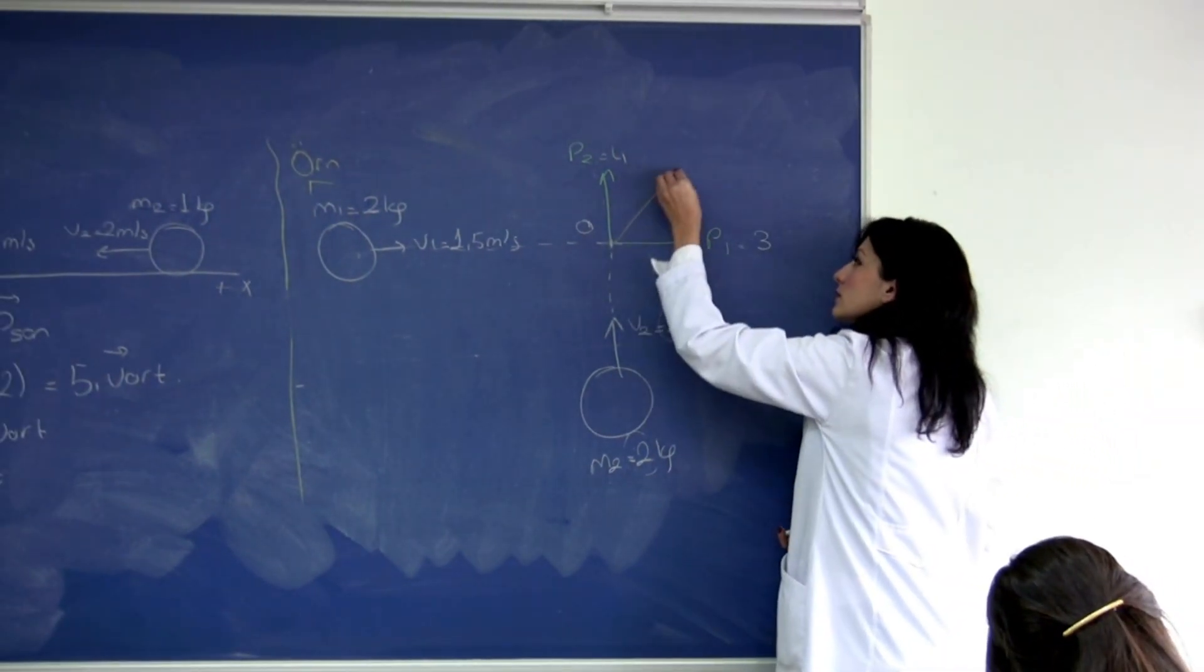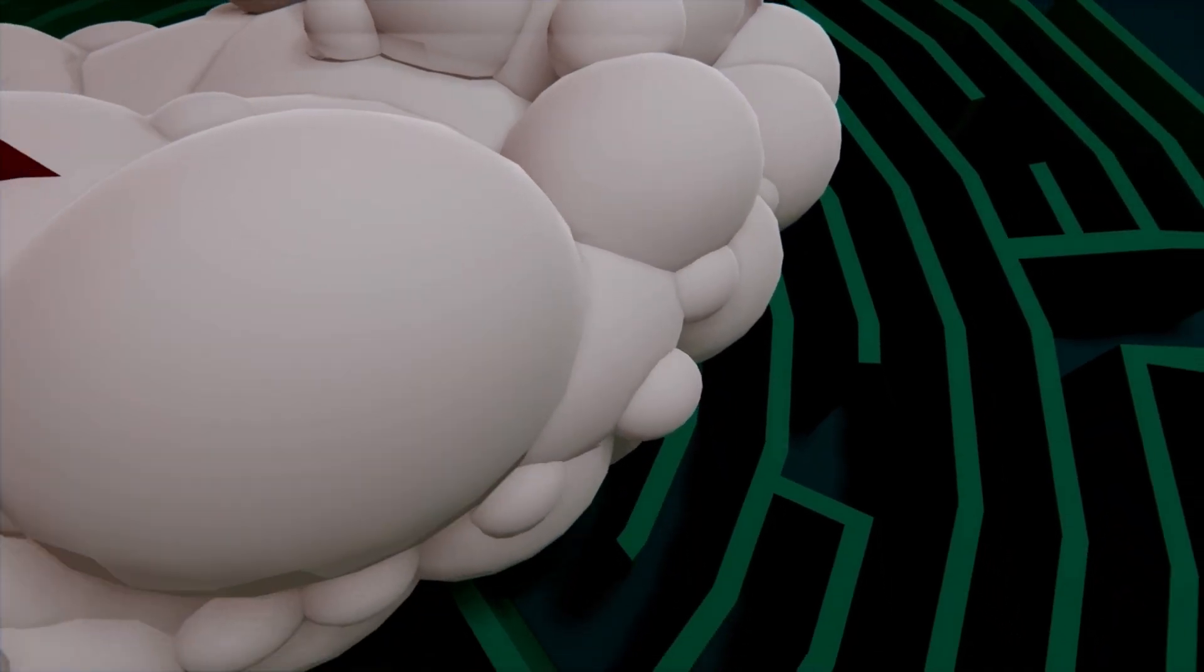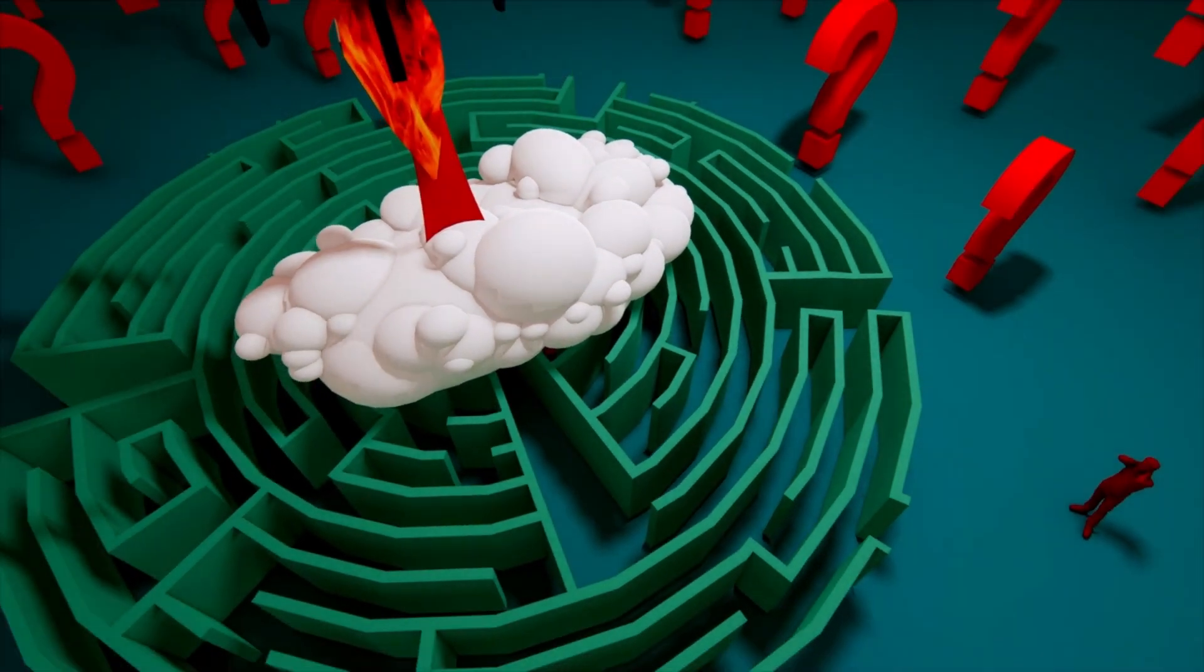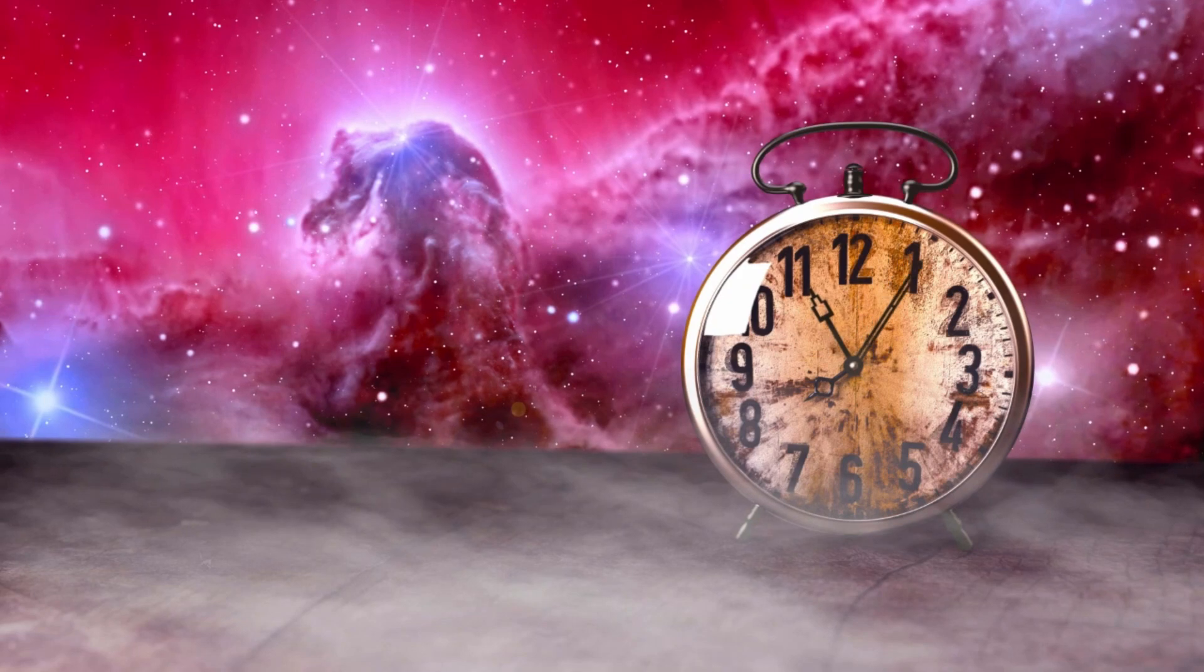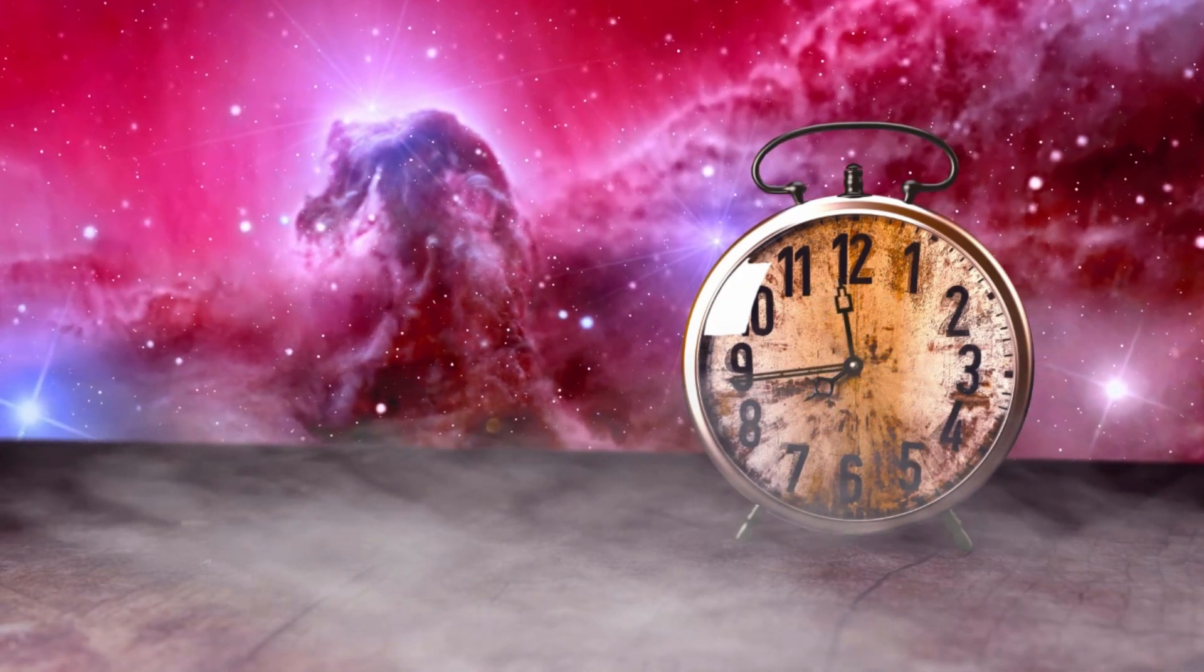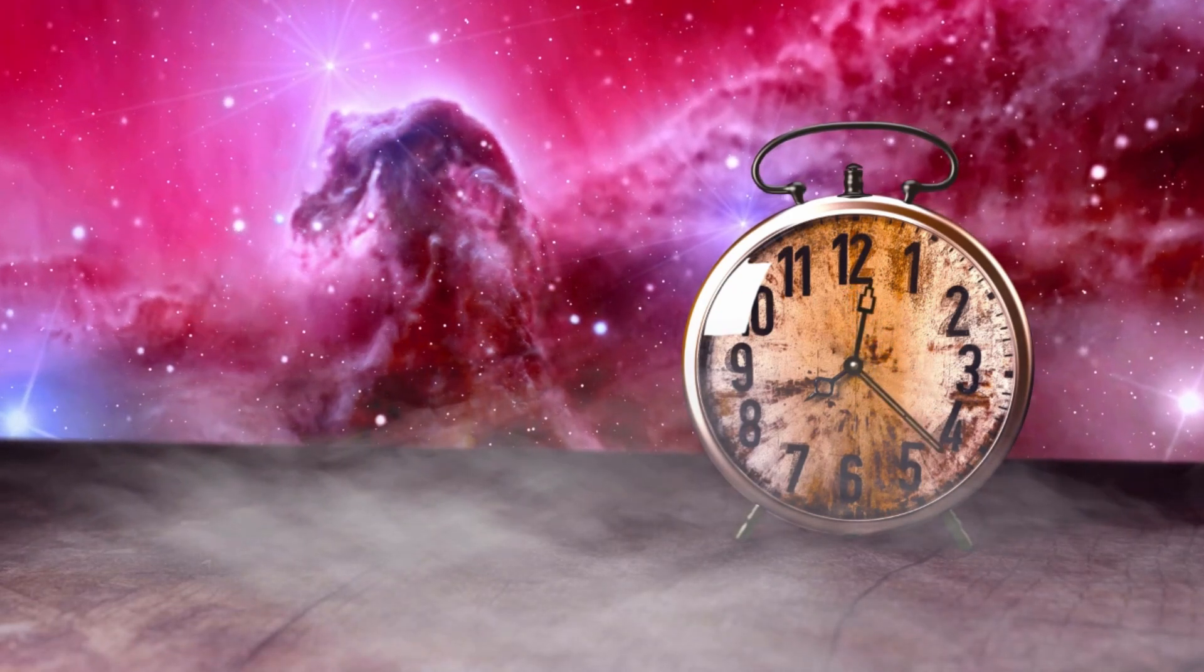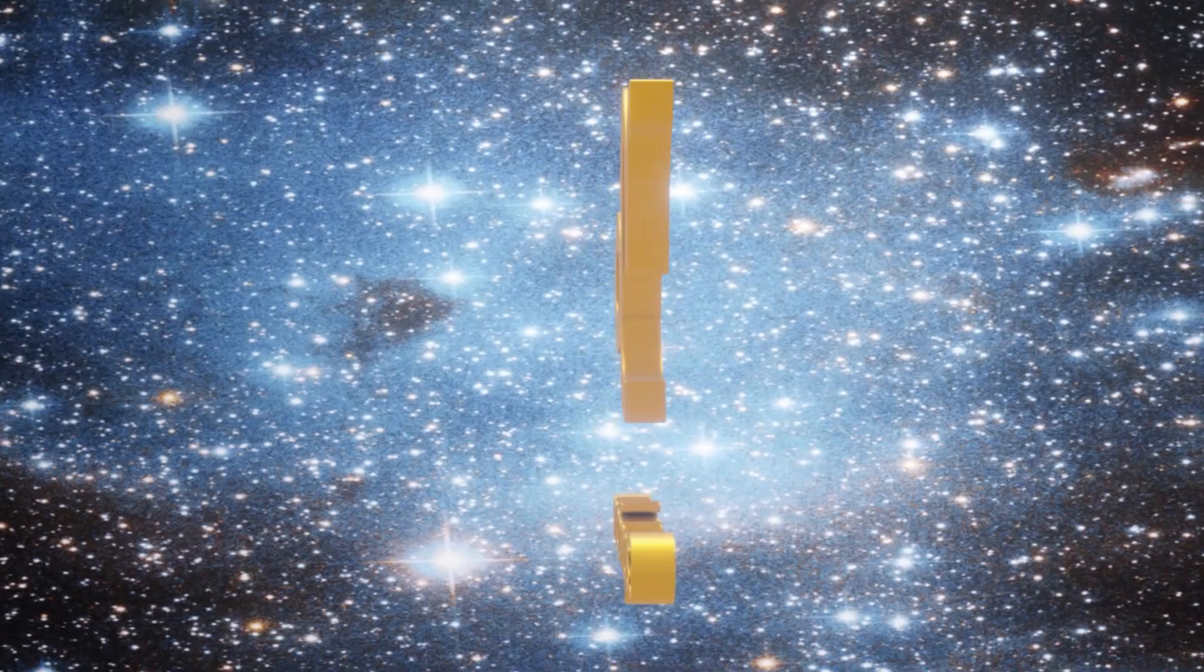The twin pillars of modern physics are Einstein's general relativity and quantum theory. To understand how the Big Bang emerged and what came before it, it is essential to unite Einstein's theory with quantum theory. Only if we obtain such a theory will we be able to answer the ultimate questions in cosmology, like what is space, what is time, what is the universe, and where did it come from.